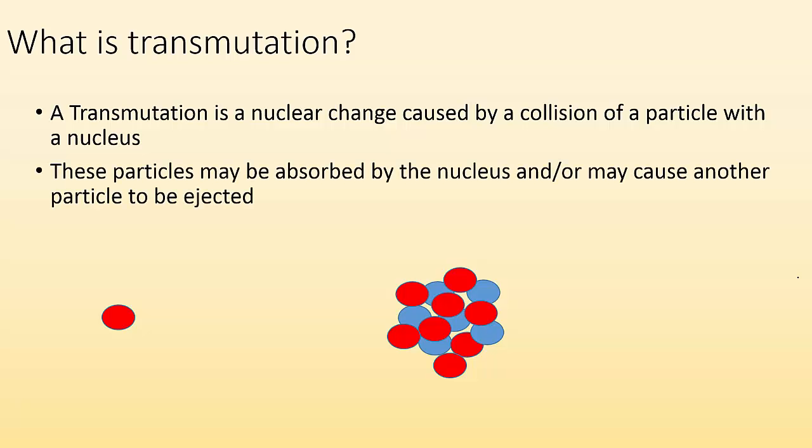These particles may be absorbed by the nucleus and or may cause another particle to be ejected. Alright, so example, if we had iron-58, we can hit that with a neutron and cause the nucleus to change.